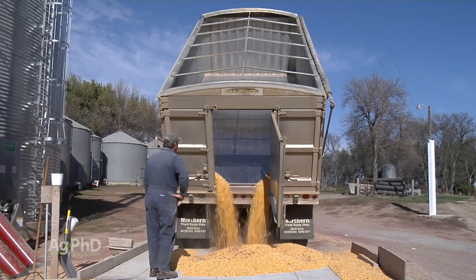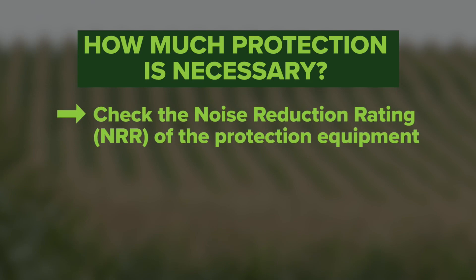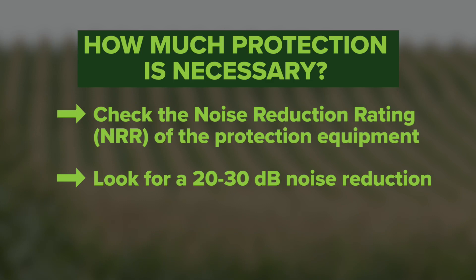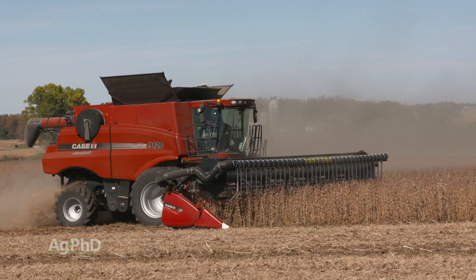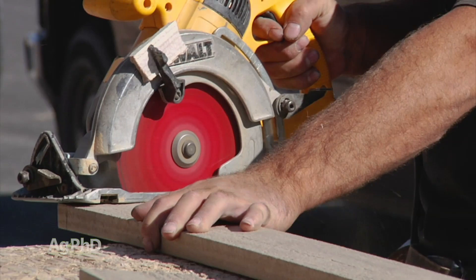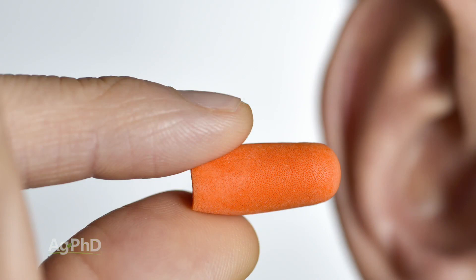Our biggest tip: protect your hearing. Whether you use foam earplugs or a fancy headset, doing something is really important. The amount of protection you need depends on the job and the noise reduction rating, or NRR, of the hearing protection device — you can find good protection with a 20 or 30 decibel reduction. Active noise reduction, or ANR, earmuff protection can electronically cancel out unpleasant noise. You can also simply limit the amount of time you're around loud noises — if you have a lot of cutting to do with a circular saw, spread out your work over several hours or even several days. Breaking up long periods of noise exposure reduces your stress level and protects your hearing.